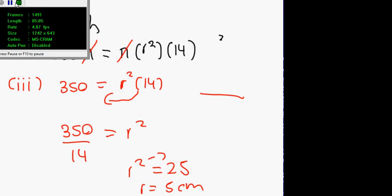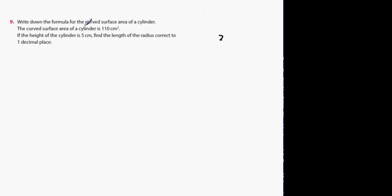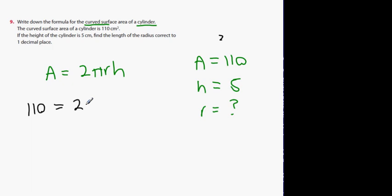I'll just underline some key words for you. You start off with that. Curved surface area of cylinder. Where are you going to get that? You're going to get it in the formulas table at the start of the exercise. Now you're on the second part. The curved surface area of the cylinder is 110. A equals 110. The height of the cylinder is 5. Find the length of the radius. So what do you think your next step is? You relate 110 to 2 pi multiplied by r, multiplied by 5.